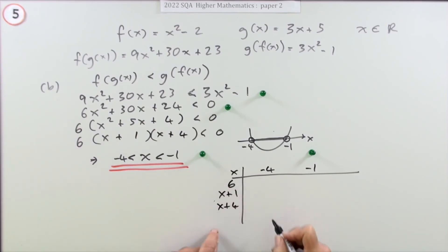I've put the 6 down - it doesn't make much difference since 6 is always positive. I just want to know whether these parts are positive or negative.